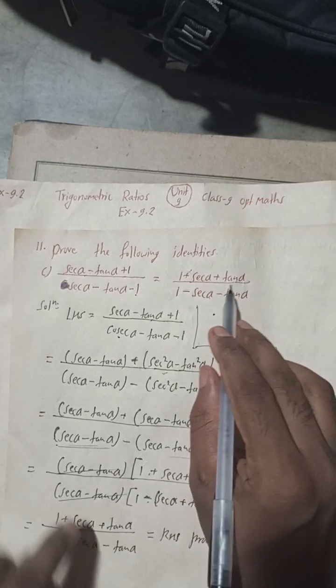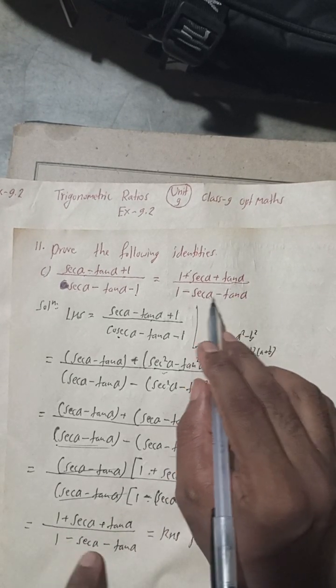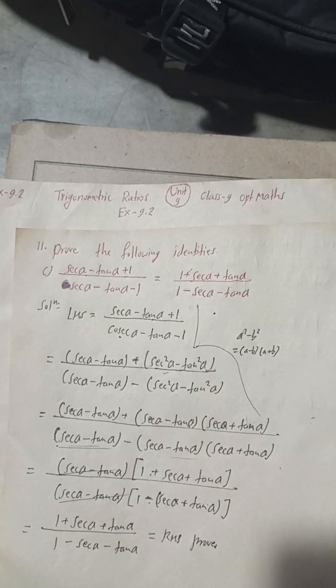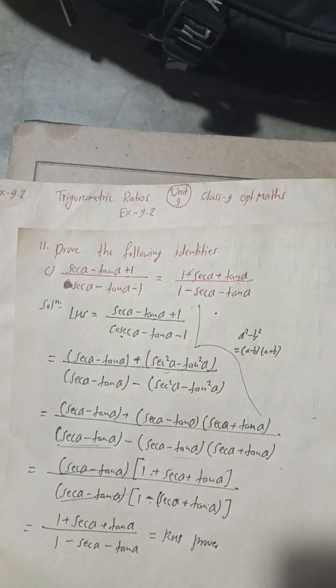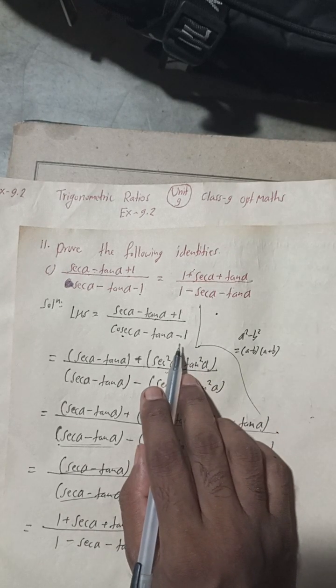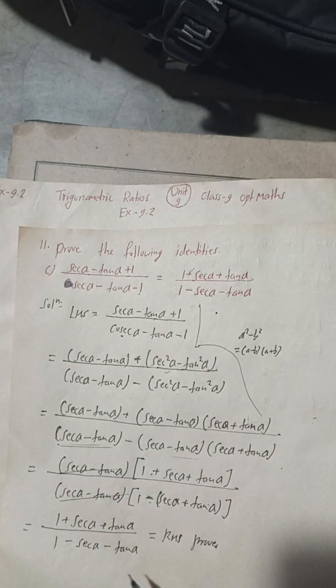Proved: 1 plus sec α plus tan α by 1 minus sec α minus tan α. This is the complete solution of 11c. You can check the playlist for solutions of 13ab, 12abc, 11ab, and in the next video I will come with 11d.